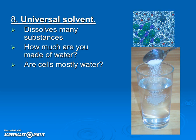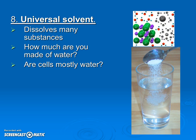Last but not least, water is the universal solvent, meaning it dissolves many things. All of our cells are over 70% water, our cytoplasm is mostly water, and we ourselves are about 70% water. Almost everything in our body is things like salt and sugar dissolved in water — and water is how we transport waste and receive nutrients. That covers all the properties of water. In class we'll do some mini experiments to practice these. See you then — bye!